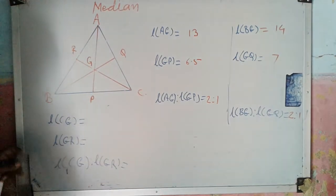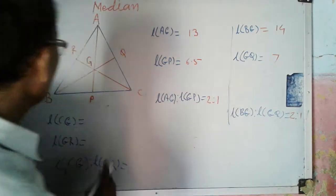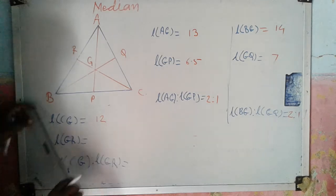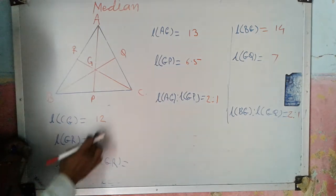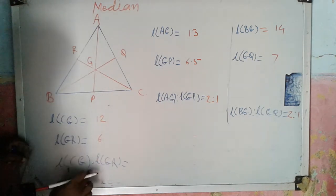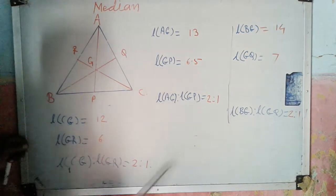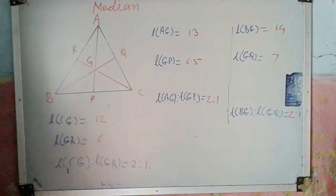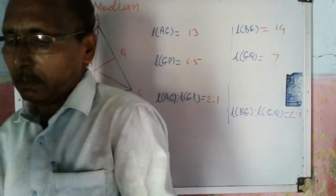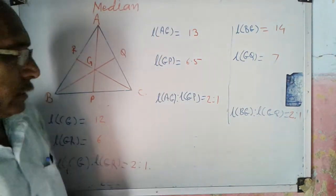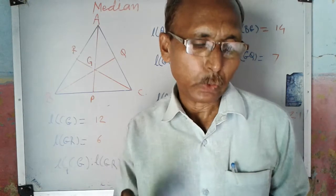And for the third median CR: CG is equal to 12, RG is equal to 6. The ratio CG to RG is 12 upon 6, which is 2 is to 1. That means each ratio is 2 is to 1. We can see here that the centroid — that means this point G — divides each median in the ratio 2 is to 1.